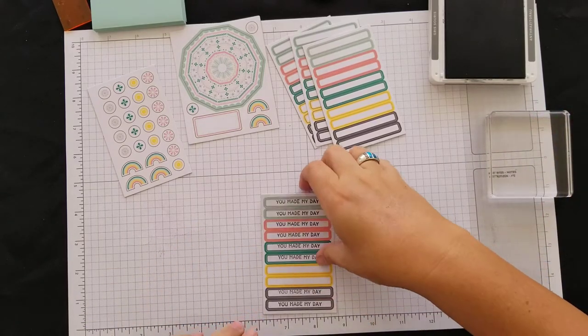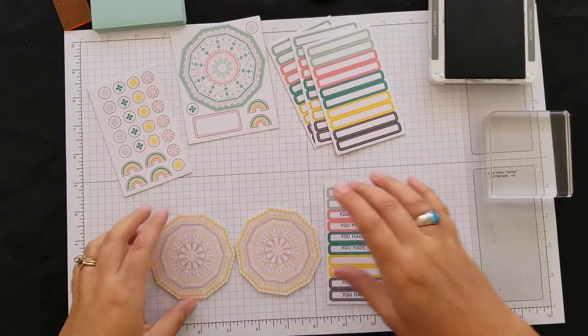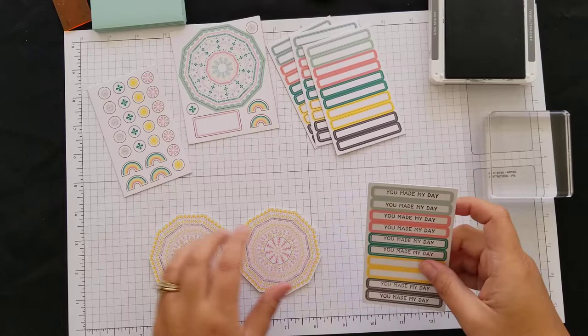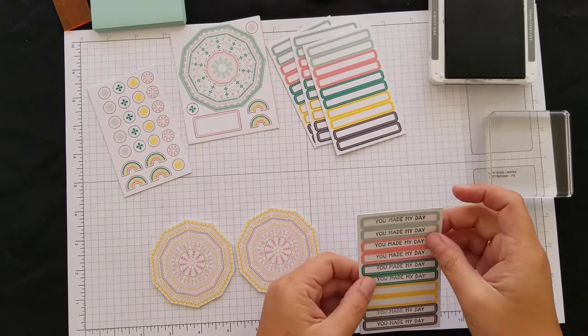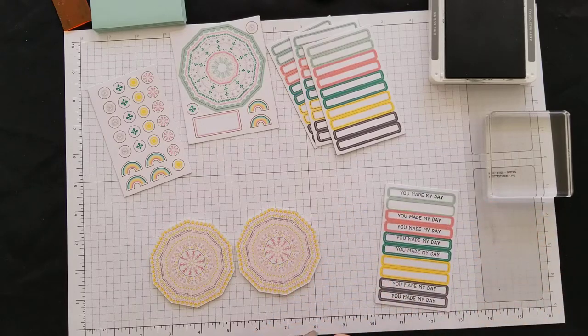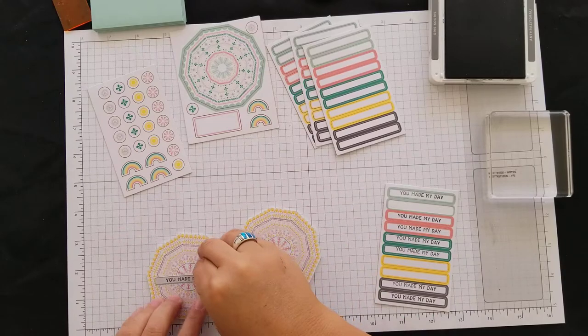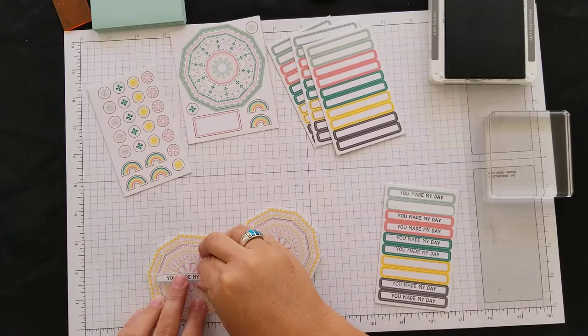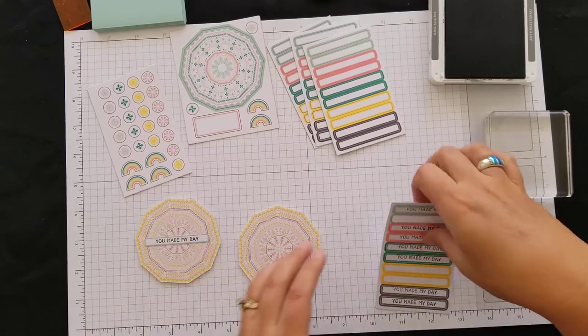So now what I'm going to do is I'm going to flip these guys over, and look how gorgeous those are on the other side. So this is the gold one, so I'm going to use the lighter green, and these are going to go just across.